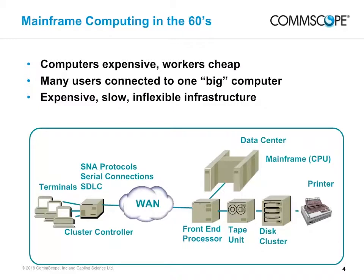To put today's LAN technology into context, we can look at earlier eras of information technology. Current LANs have their roots in the connections between early mainframes and the dumb terminals used to access them. Typically, the mainframe's front-end processor connected to a cluster controller that managed the input and output of a group of terminals. The links were serial connections running SNA, or System Network Architecture protocols, with SDLC software to manage the data traffic. Cabling was usually coaxial. Often, one big computer served a whole building or several buildings, so the link between the front-end processor and cluster controllers used wide-area network technology. In a world where computers were expensive and labor relatively cheap, this expensive, slow, inflexible data communications infrastructure was accepted.